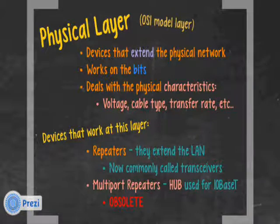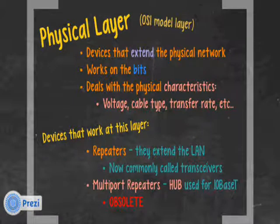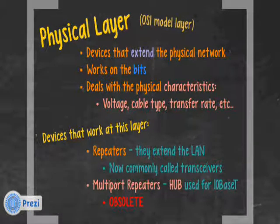A repeater or transceiver typically has an in and an out. If you take a repeater and put multiple ports on it, we call that a hub, and that was used for 10BaseT. That's obsolete — we don't use hubs anymore except for some really unusual situations. Mostly we don't use hubs; it's obsolete technology.